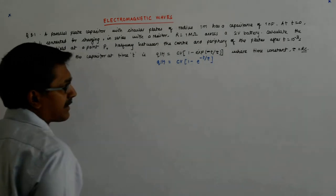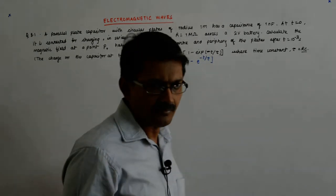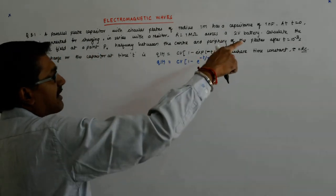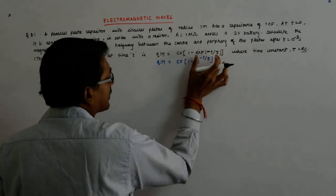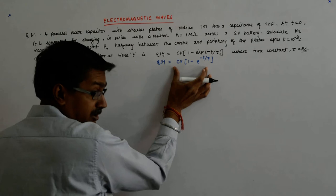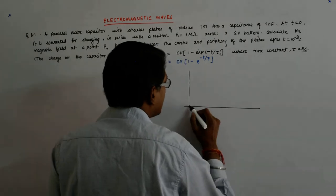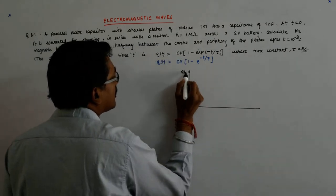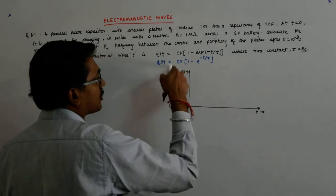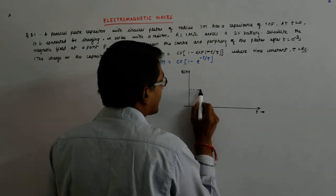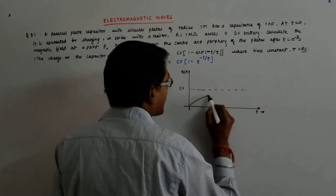This tau is given by RC which is the time constant of the circuit that decides how fast or slow the charge will rise. At T equal to 0, this whole thing is 0, so the charge starts with Q equal to 0. At T equal to infinity, this becomes 0 so it becomes CV, a constant.